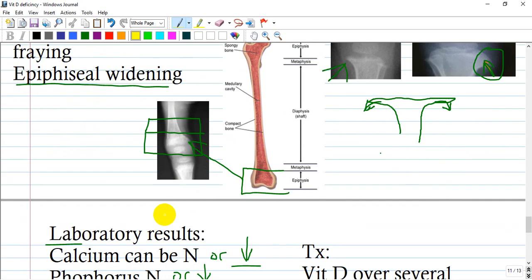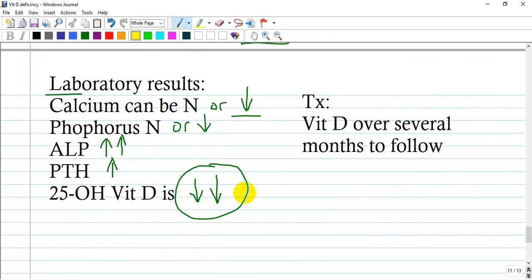Lab results: vitamin D and calcium are decreased, and phosphorus also, as vitamin D contributes to reabsorption of phosphorus through the intestine. Only markers that will be increased are parathyroid hormone as negative feedback, and alkaline phosphatase by action of parathyroid hormone.